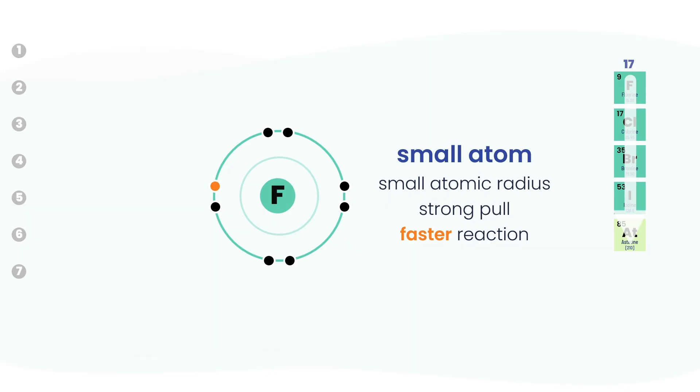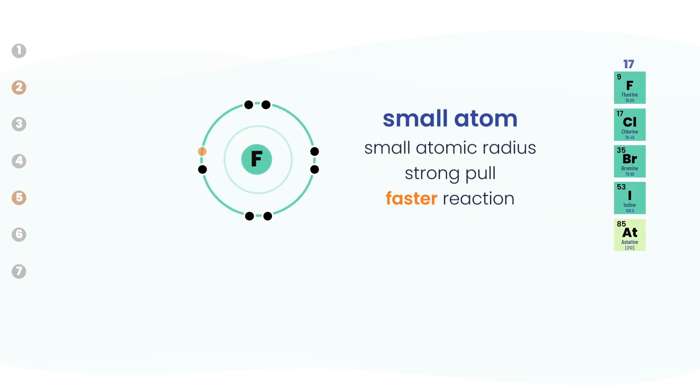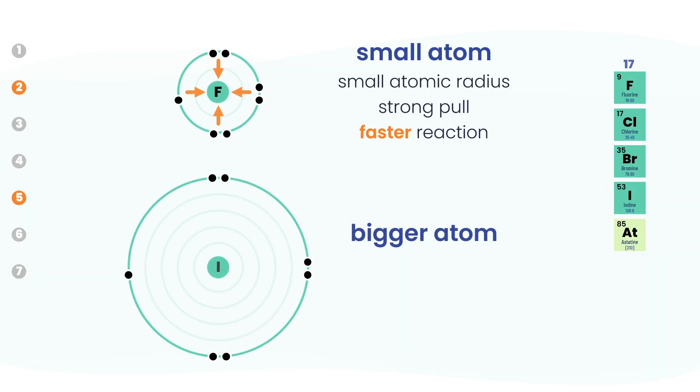But as you move down the group to chlorine, bromine, iodine, the atoms get bigger. More shells, more distance, a larger atomic radius. The nucleus is now much further away. Even with more protons, the greater distance weakens the pull. The grip loosens. It's harder to attract and hold a new electron. That's why fluorine is the most reactive in the group. And iodine, with its large radius, has a slower reaction.